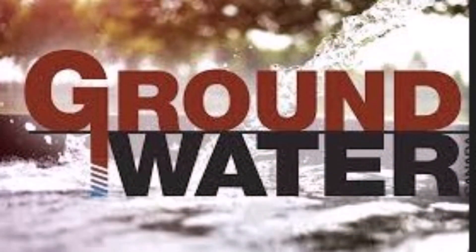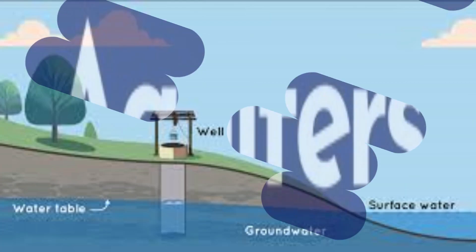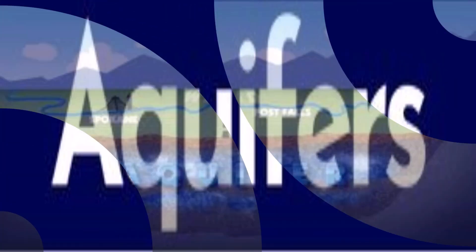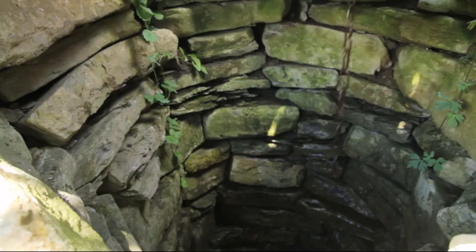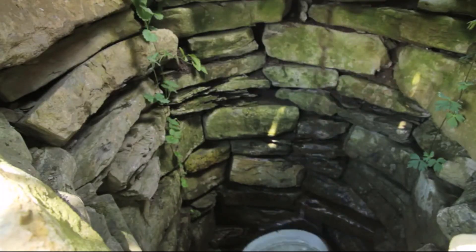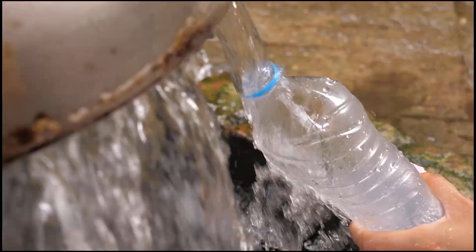Groundwater is water that has infiltrated into the ground and collected in underground layers called aquifers. These aquifers store vast amounts of water that can be accessed through wells, providing us with fresh water.